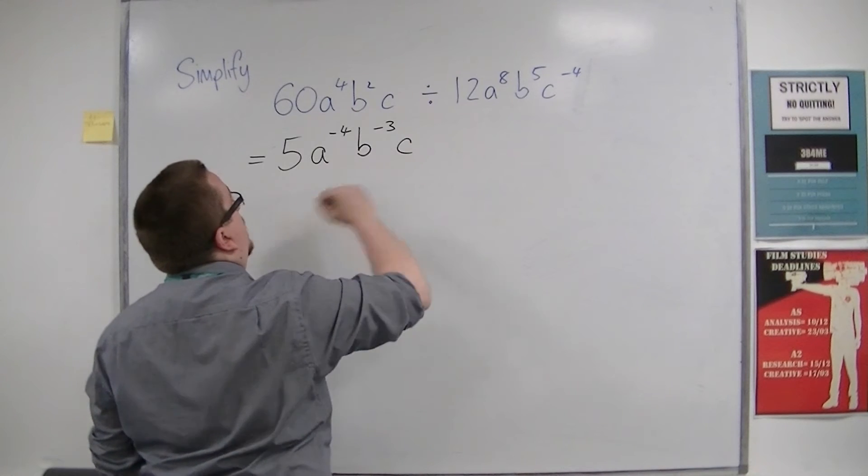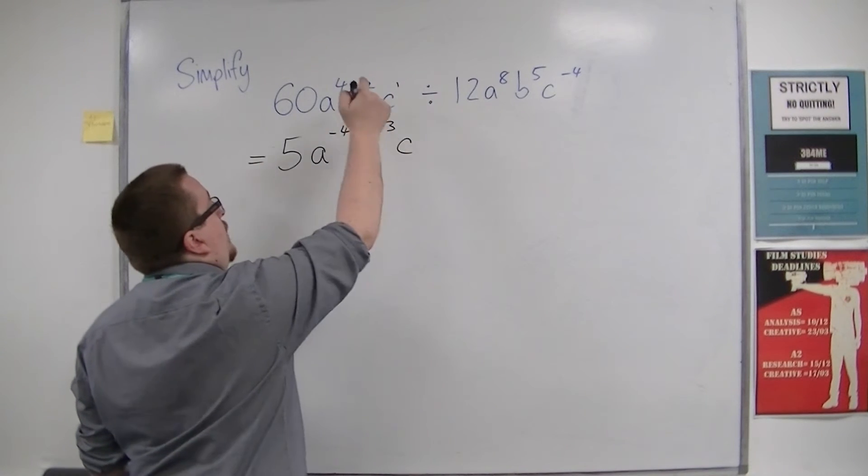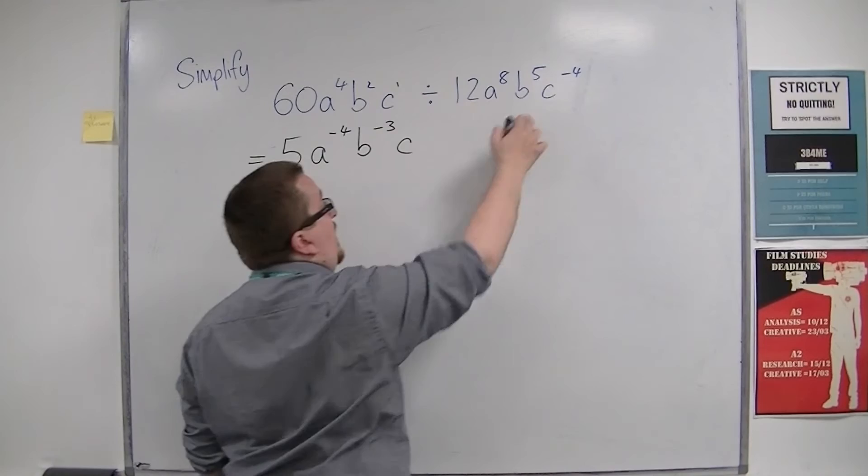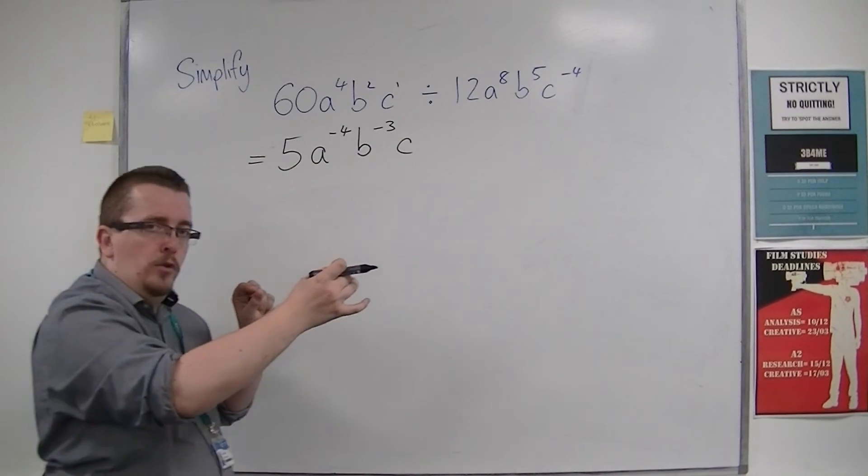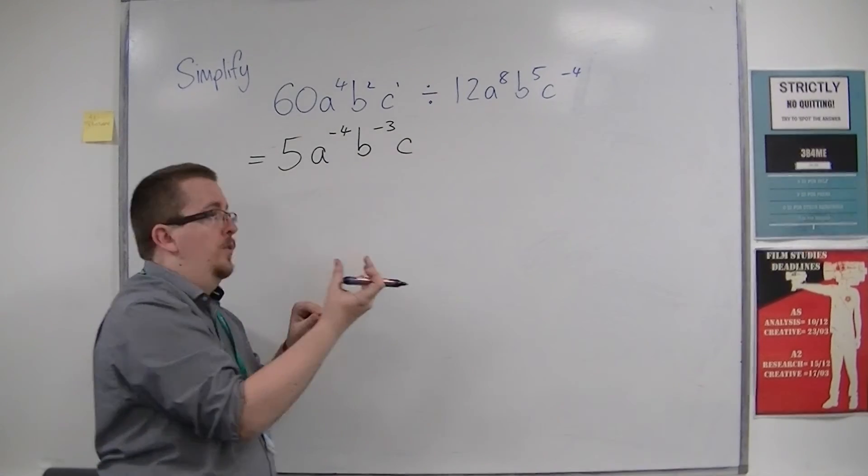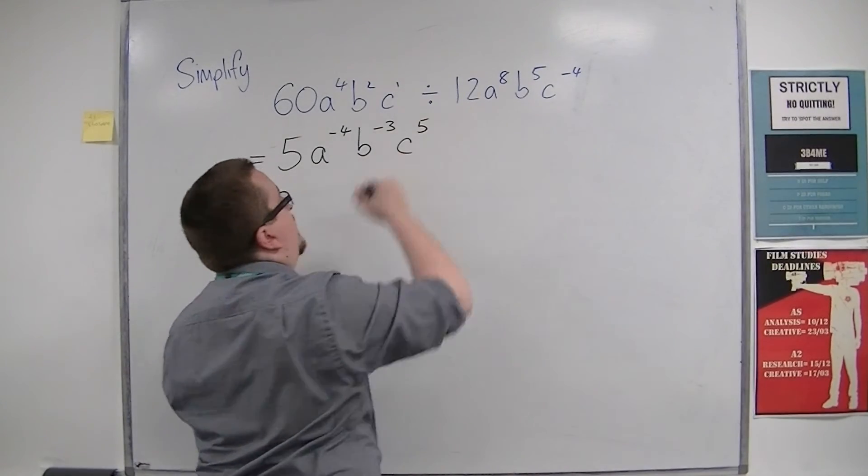Then we have the c's. We have a singular c there, so c to the 1 divided by c to the minus 4 is c to the 1 take away minus 4, which is 1 plus 4, and so we would have c to the 5.